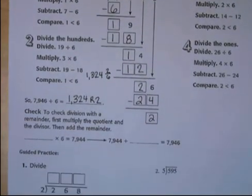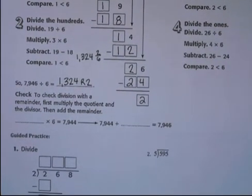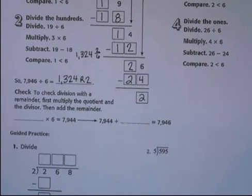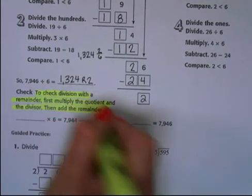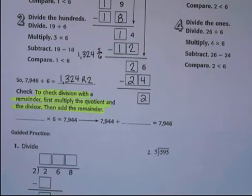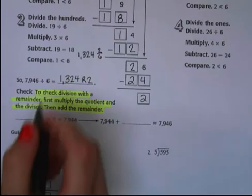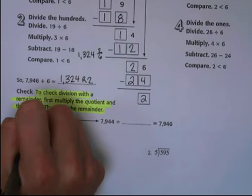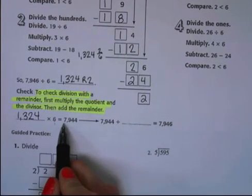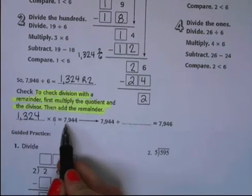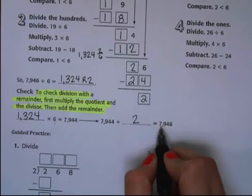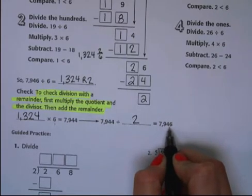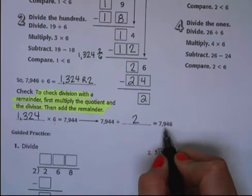The final step in this problem is to check our answer. To check division with a remainder, there's a couple steps you have to do. I'm going to go ahead and highlight this because this is important. First, we multiply the quotient and the divisor. So we have 1,324 times 6, which gives us 7,944. Now we need to add our remainder in. So we have 7,944 plus our remainder of 2, which gives us 7,946. This gets us back to the original number we started with, so we know that we did our division correctly.